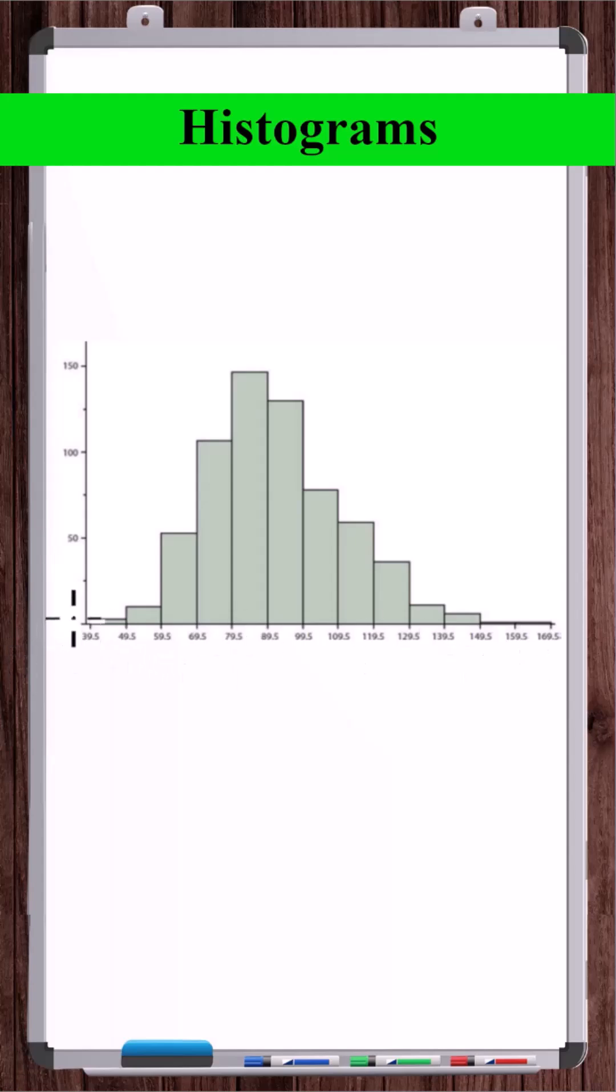Histograms have a horizontal and vertical axis. It's easy to think that histograms relate two different sets of numbers, like heights on the vertical axis and weights on the horizontal. But behind every histogram is just a single list of numbers.